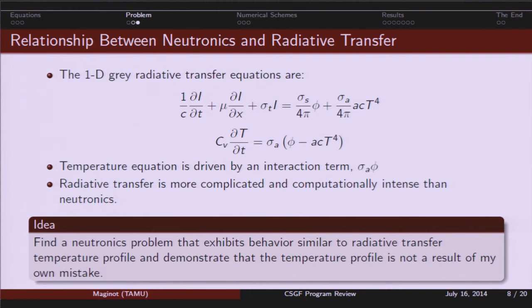All right. So, these are the 1D gray radiative transfer equations. And you can see it looks a lot like the transport equation. You have the time dependence tossed back in and you have a non-linear source term here. And then you've also got the material temperature equation. All right. So, basically this is driven by an interaction rate. Radiative transfer is a lot more complicated. It's time dependent. It's a beast to try and solve.